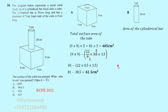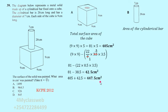The cube will therefore give a total painted surface area of 405 centimeters squared plus 42.5 centimeters squared, which equals 447.5 centimeters squared. That is the area of the cube that will receive paint.